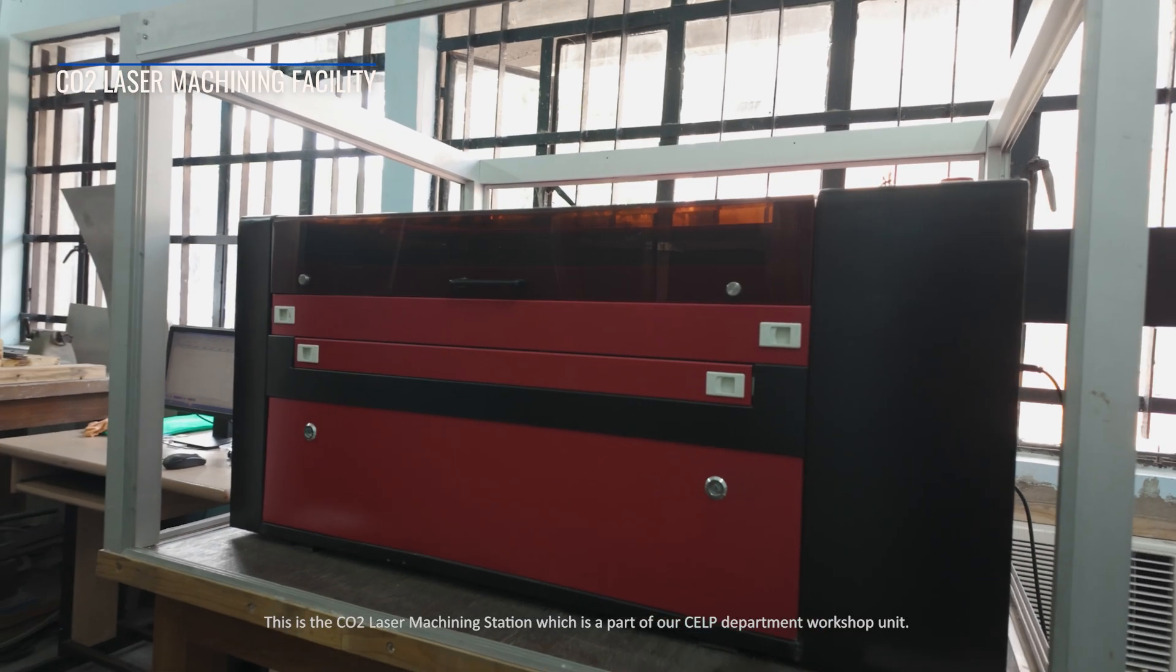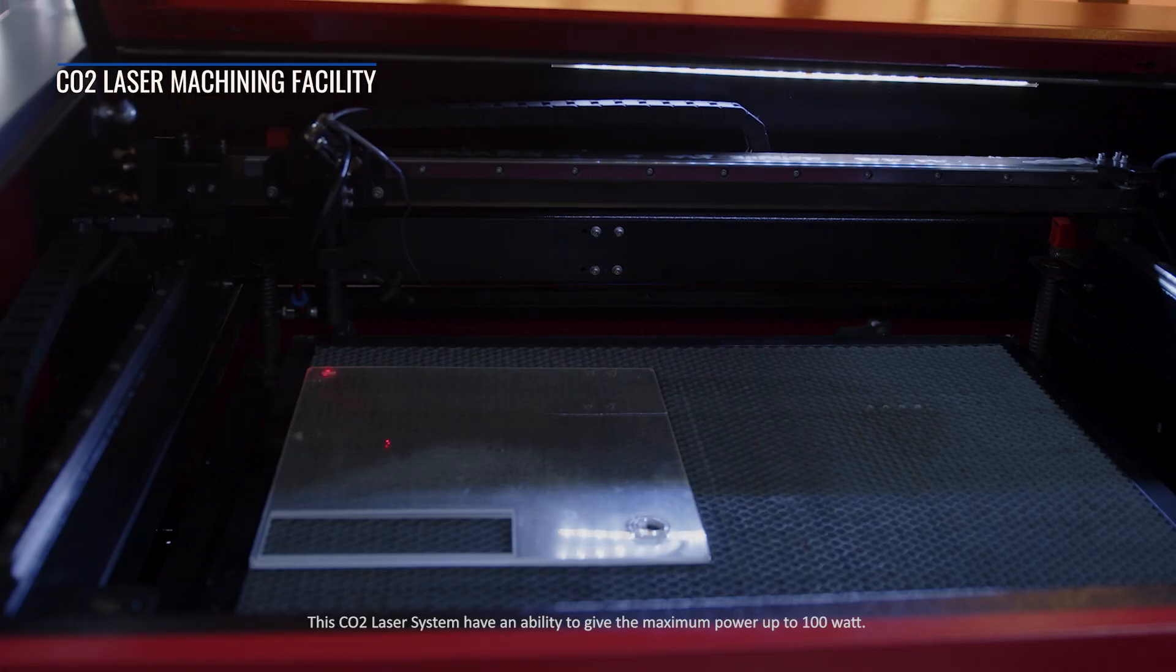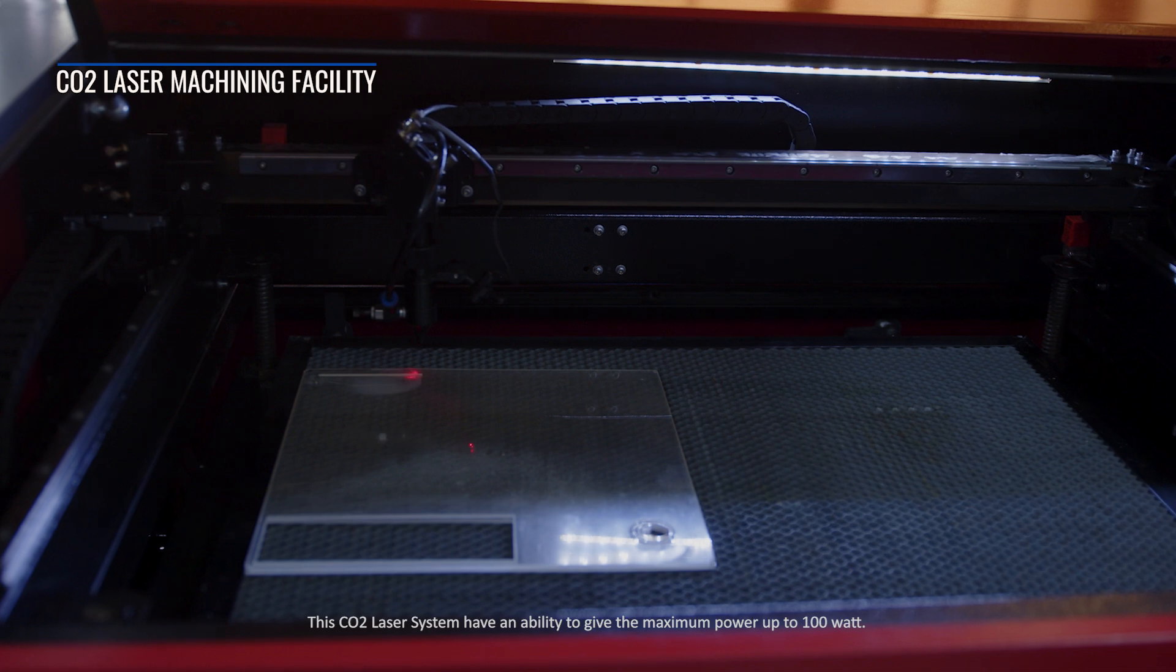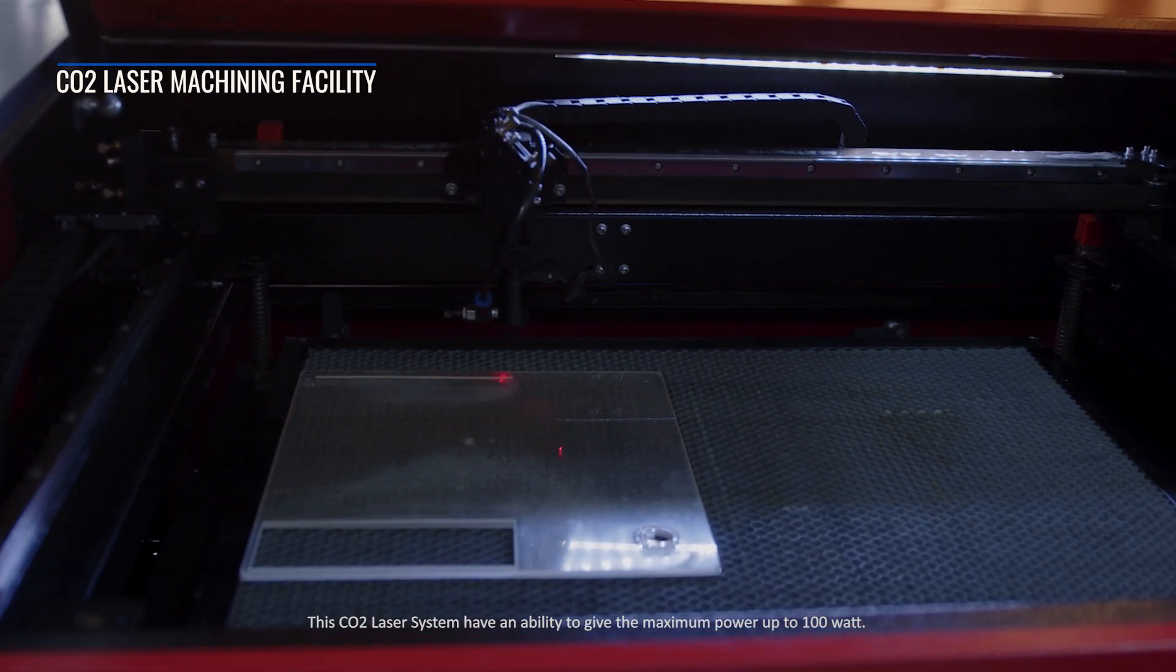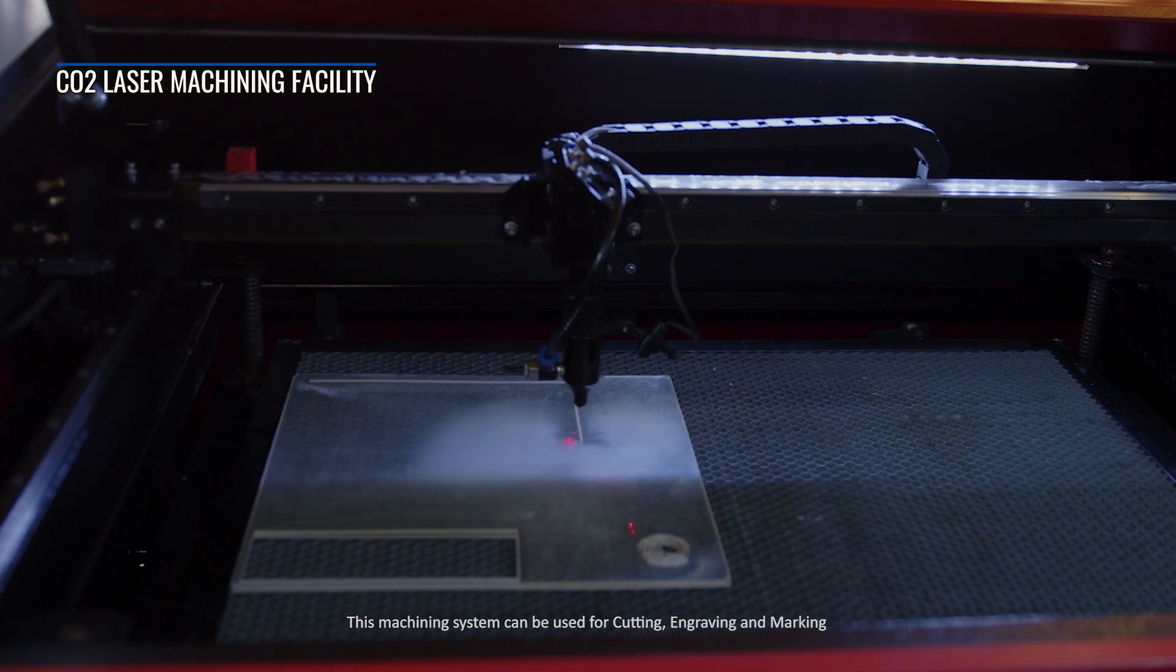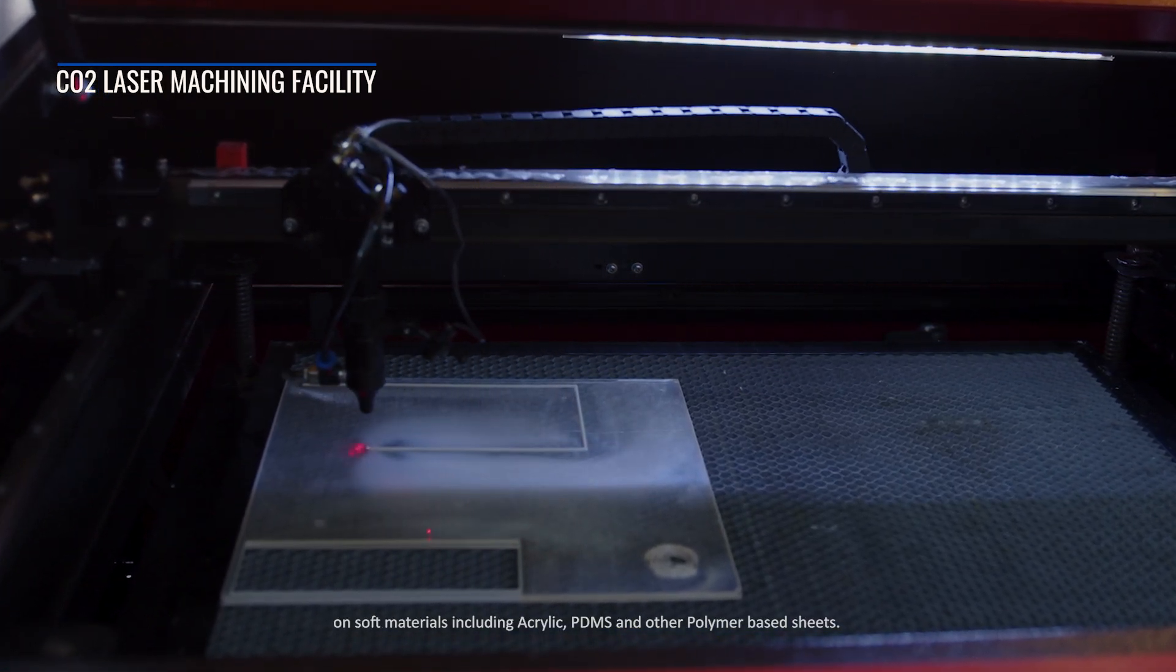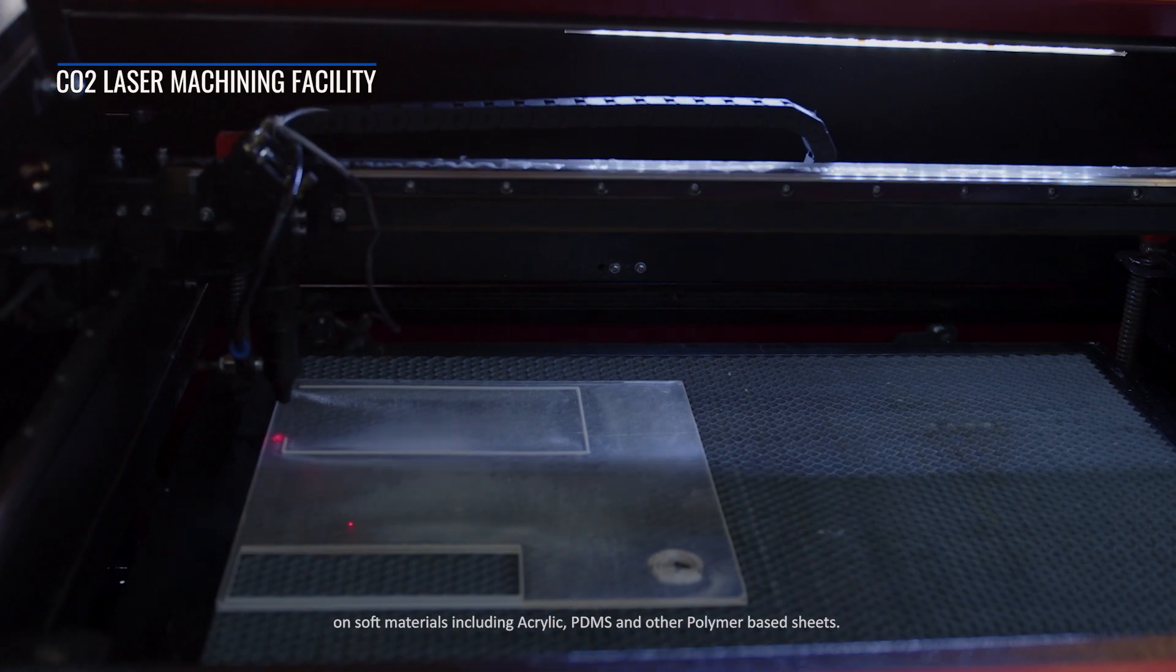This is the CO2 laser machining station which is part of our CELP department workshop unit. This CO2 laser system has the ability to give maximum power up to 100 watts. This machining system can be used for cutting, engraving, and marking on soft materials including acrylic, PDMS, and other polymer-based sheets.